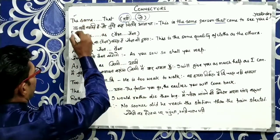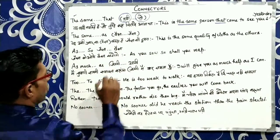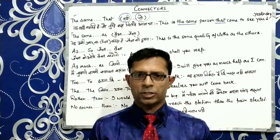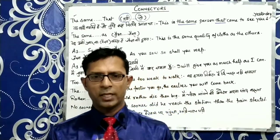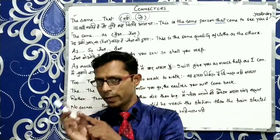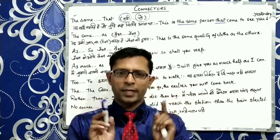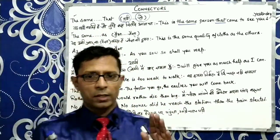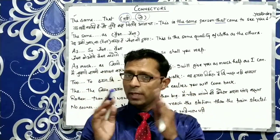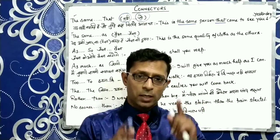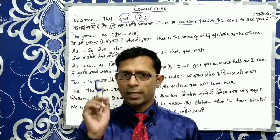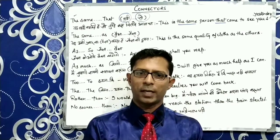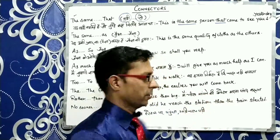اگلا connector ہے The Same As. یہ دونوں دیکھنے میں تھوڑے ایک جیسے لگ رہے ہیں لیکن دونوں میں difference ہے. The Same As کا مطلب ہے ویسا اور جیسا — یعنی کہ ایک جیسی دو چیزیں جو دکھنے میں ایک جیسی ہوں. The Same That وہاں آئے گا جہاں دو الگ الگ جگہ پر ایک ہی چیز کی بات ہو رہی ہوگی، اور The Same As میں چیزیں الگ الگ ہیں لیکن دکھنے میں ایک جیسی ہیں.